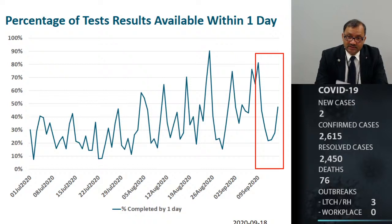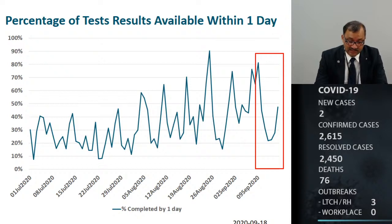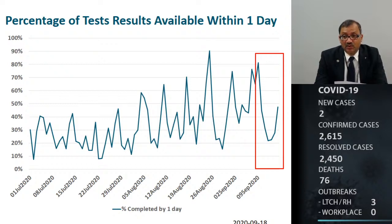This is a slide we didn't show for a couple of weeks. It looks at the percentage of test results available within one day of someone getting tested. As highlighted in the red box, the number of test results being received within one day is going down, meaning the turnaround time is increasing in our region for getting a test result.